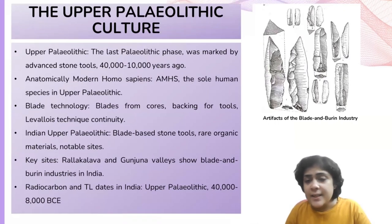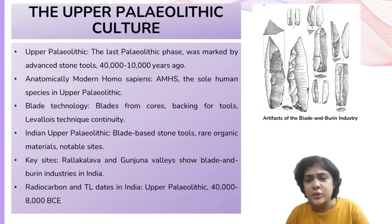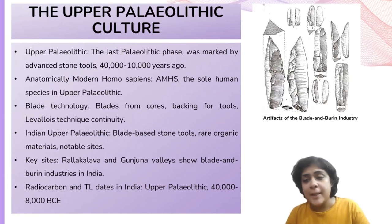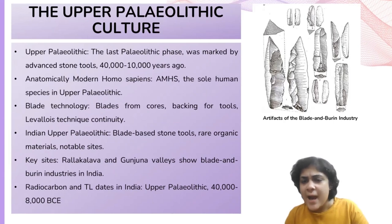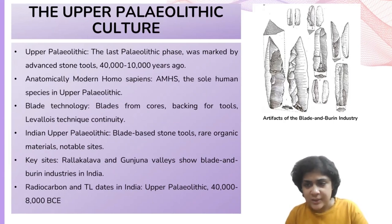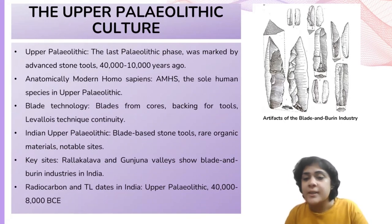The Upper Paleolithic is the final phase of the Paleolithic era, characterized by significant human achievements occurring during the later stages of the upper Pleistocene, often referred to as the late Pleistocene. It was a period of flourishing cultures in various parts of the world, spanning roughly 40,000 to 10,000 years ago, and is associated with anatomically modern Homo sapiens (AMHS), the only surviving human species. It succeeded the Middle Paleolithic cultures like the Mousterian and other flake tool cultures.